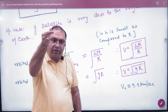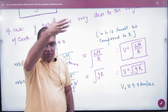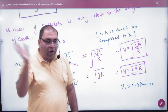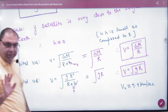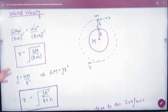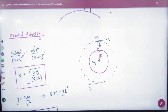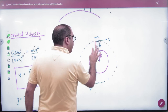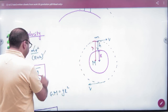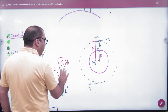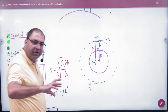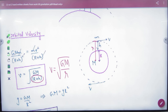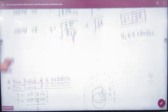In one second, the satellite covers about 8 km — that is how fast it is. This speed applies when the satellite is close to the surface of the Earth. Some books use small r in place of R + H when the satellite is close to the surface. So the formula becomes √(GM / r), where small r approximately equals capital R. This is the formula for orbital velocity.